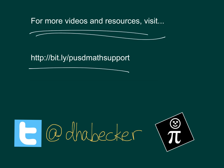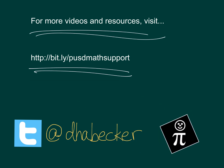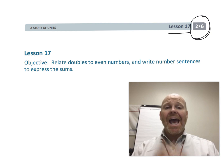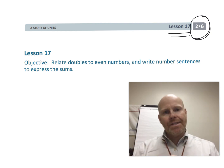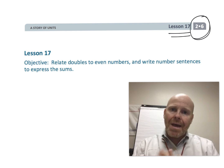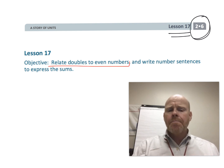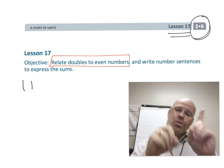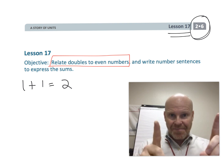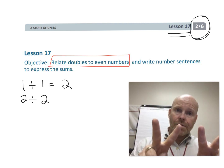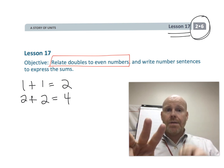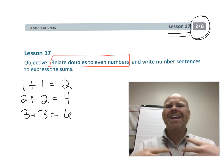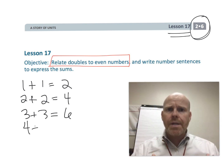This is second grade module 6 lesson 17. In this lesson, students are going to be learning about evens and odds. Specifically in Eureka Math, students are going to be taught that evens are the result of a number being doubled — like 1 plus 1 is 2, so 2 is even; 2 plus 2 is 4, so 4 is even; and 3 plus 3 is 6, so 6 is a double and it's even.